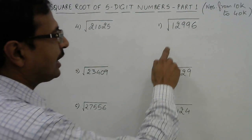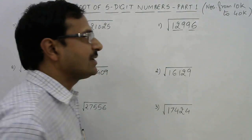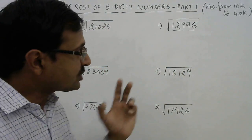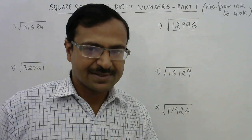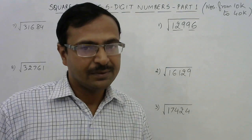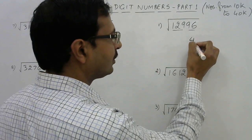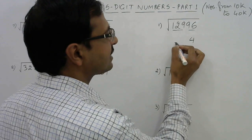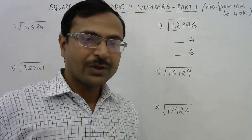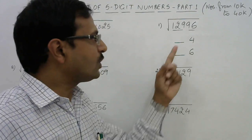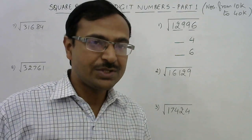Let's see this trick. First, I am taking 12996. I'll divide this number into two parts: the first three digits and the last two digits. The last two digits are 96 — the number ends with 6. Whenever a number ends with 6, the square root ends with either 4 (because 4² = 16, ending with 6) or 6 (because 6² = 36, ending with 6).